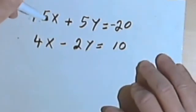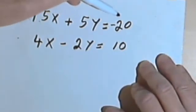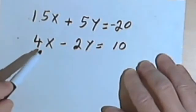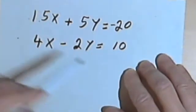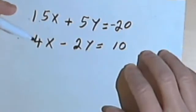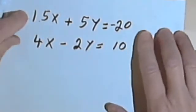So for instance, here I've got this problem, 15x plus 5y equals negative 20, and 4x minus 2y equals 10. And before you jump in and just start doing this, take a look at the problems.